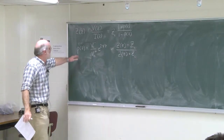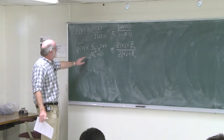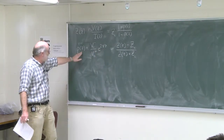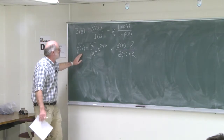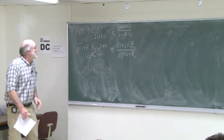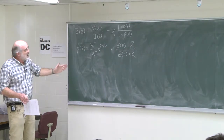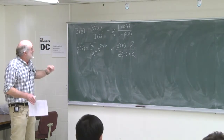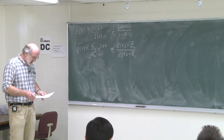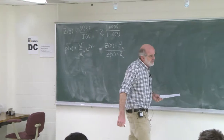If we know the impedance somewhere, we can find the reflection coefficient. If we know the reflection coefficient at one position z, we can move to a new position z on the line and get it there. At that new position, we can put the reflection coefficient back in and get the total impedance at that new position. In this way, we can move down the line, interchanging between reflection coefficient and total impedance as circumstances and what we know at that point change.